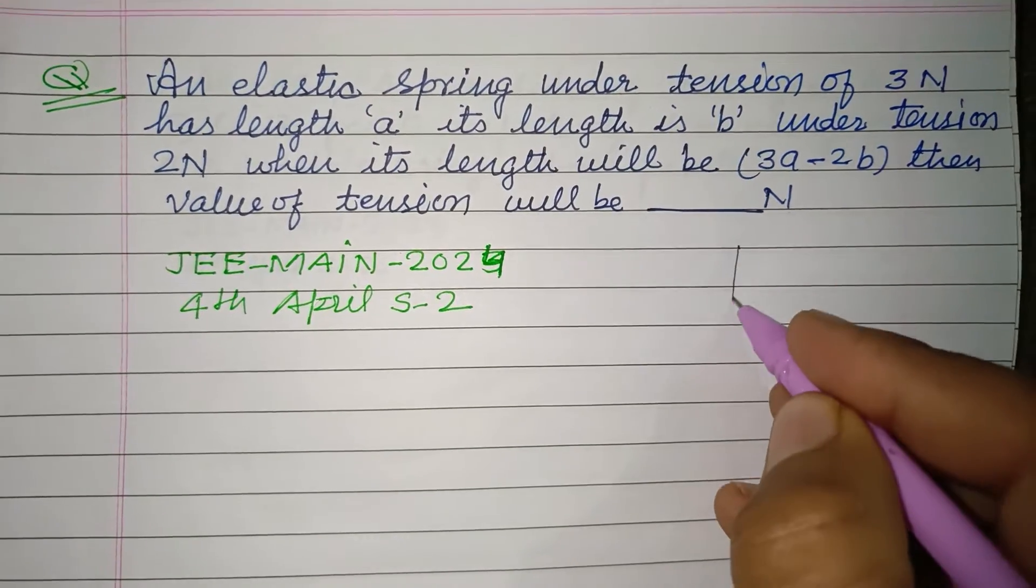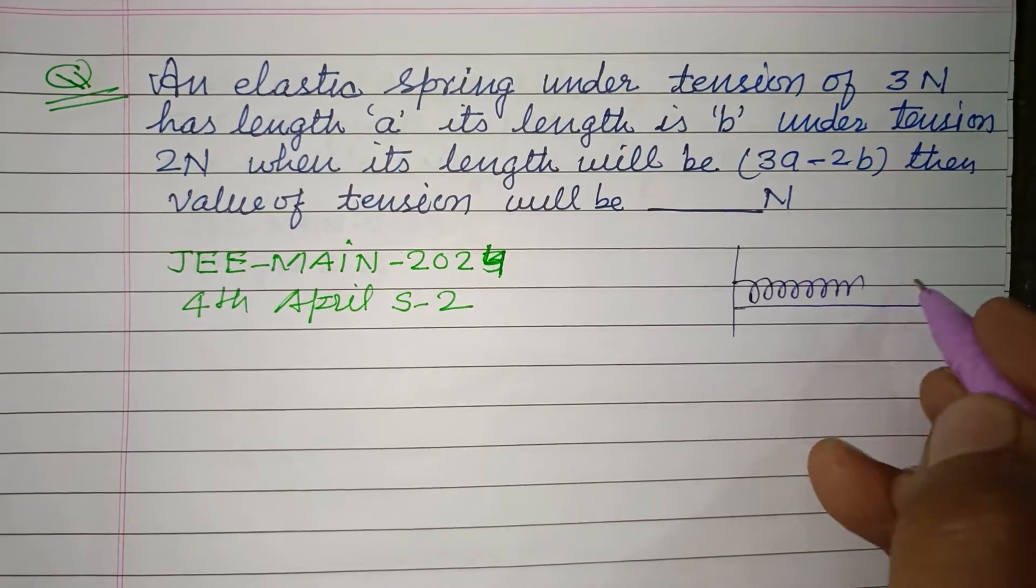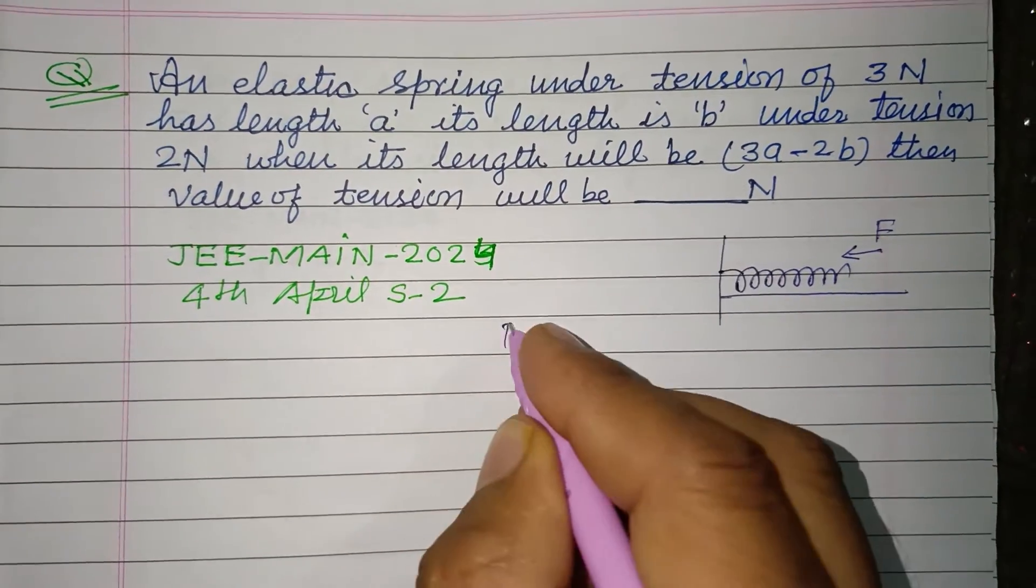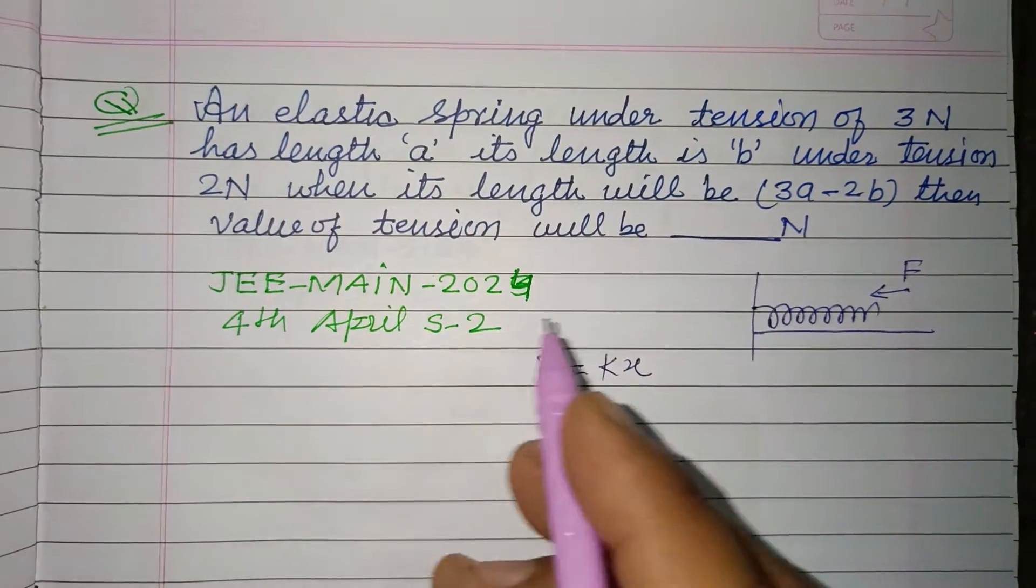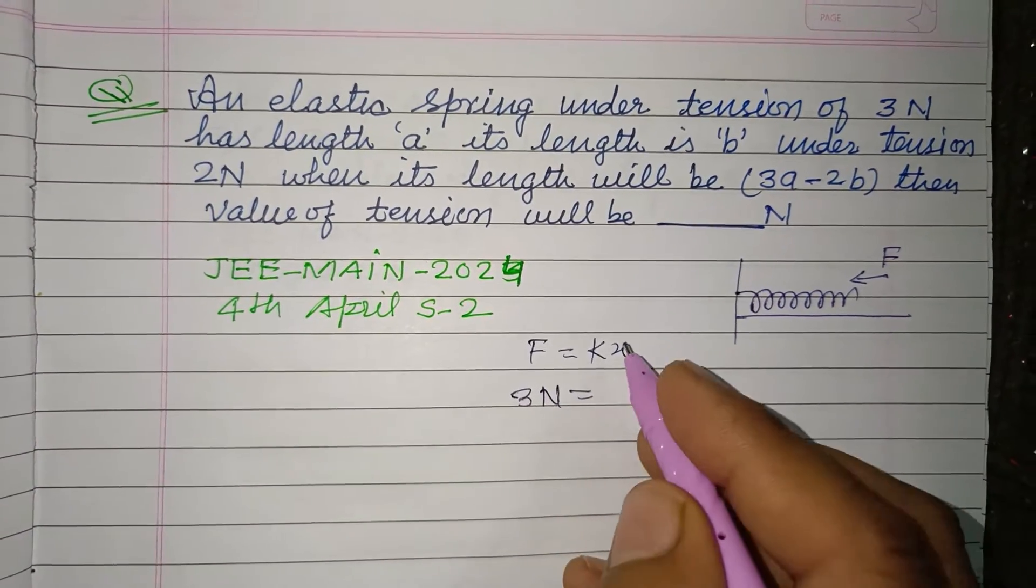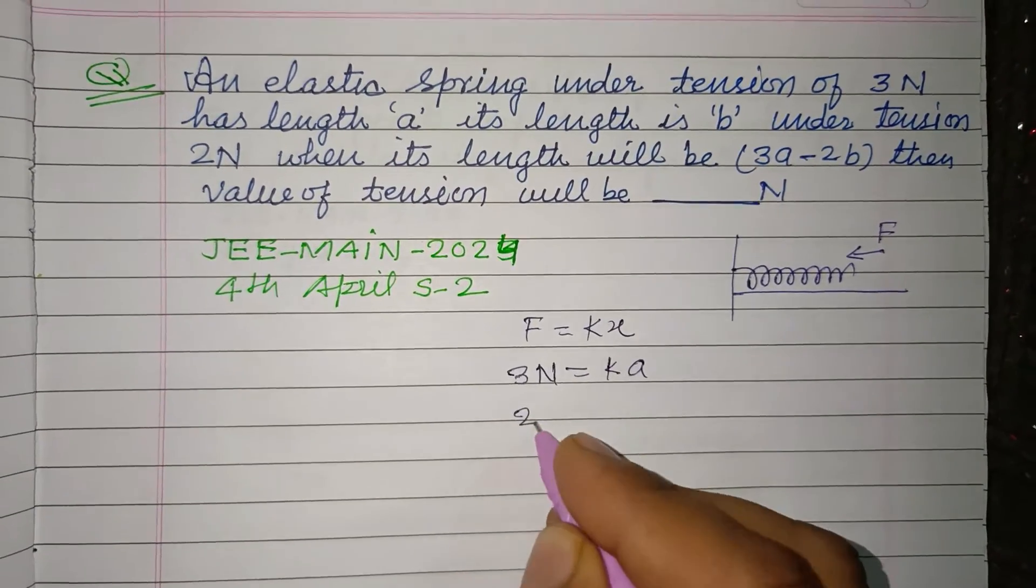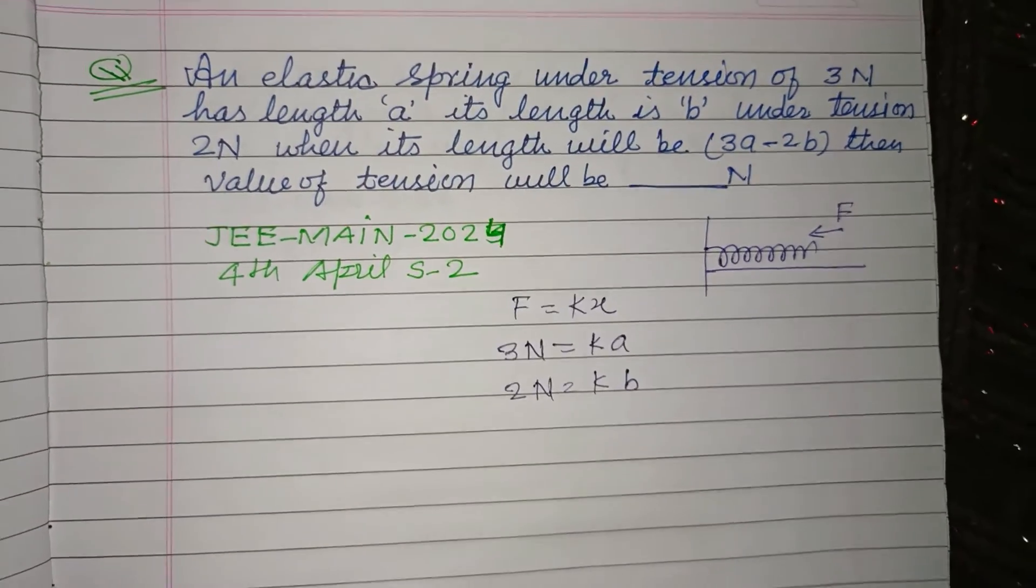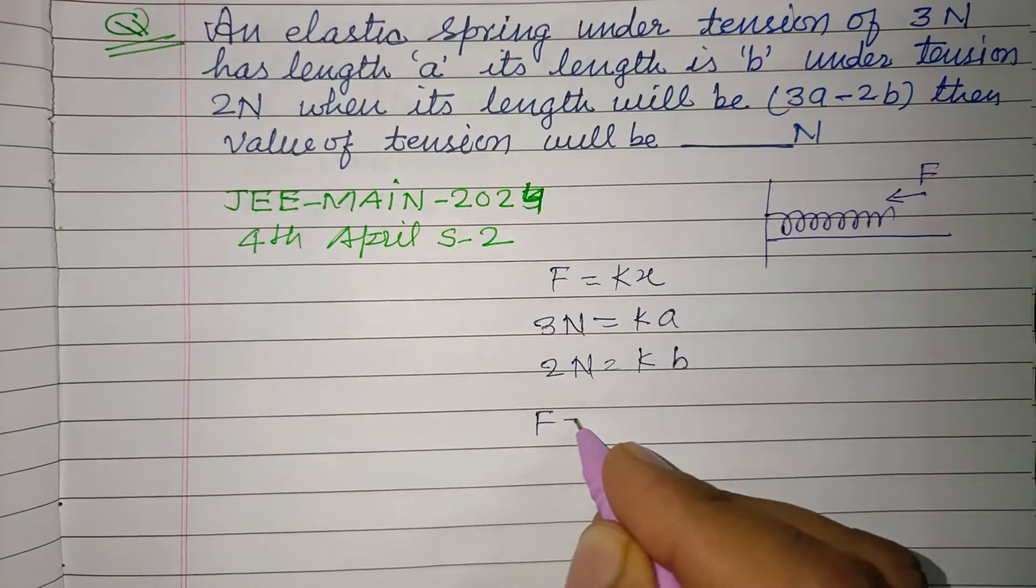You know that for a spring, when it is pressed by force F, then F equals kx. According to this question, when tension is 3 Newtons the length is 'a', and when tension is 2 Newtons length is 'b'. And when length is (3a - 2b), what is tension? Let tension be F and length is (3a - 2b).